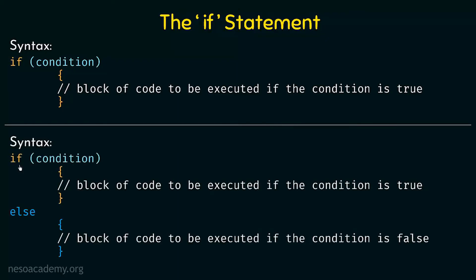Coming to the if-else part, we write the if statement the same way. If the condition is true or satisfied, then the first block of code will be executed. If the condition is not true — that means if it is false — we come to the else part and that block of code will be executed. Basically: check the condition; if true, execute the if part; if not true, come to else and execute that part.